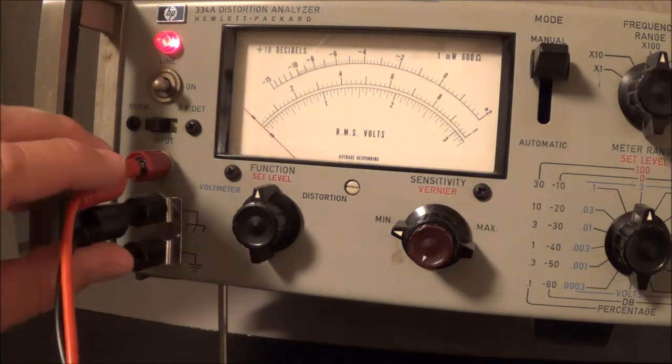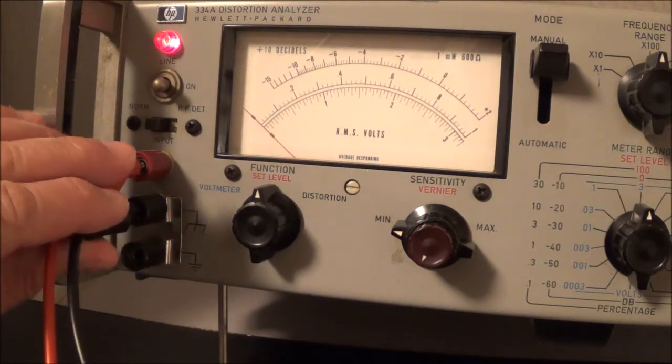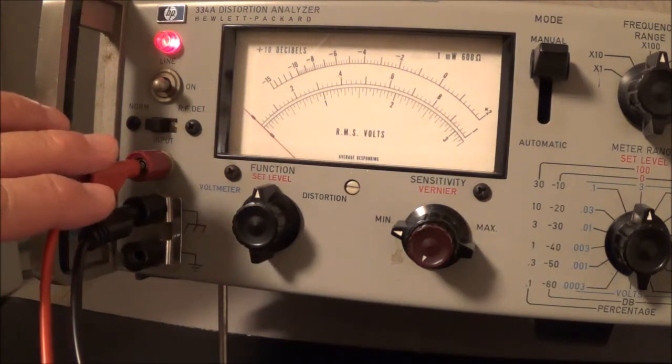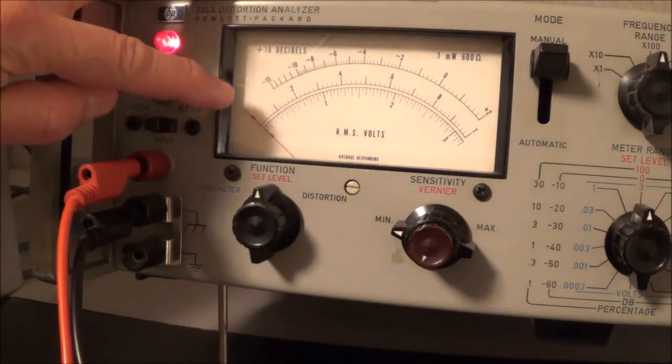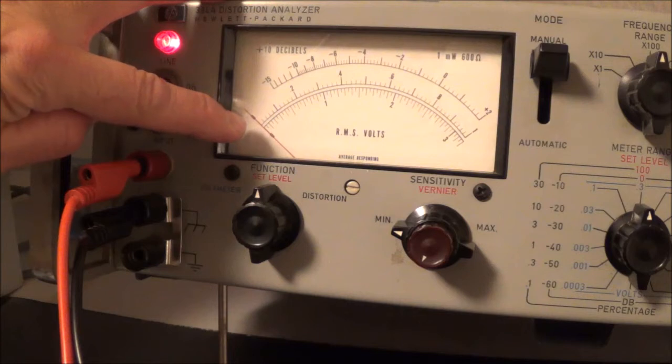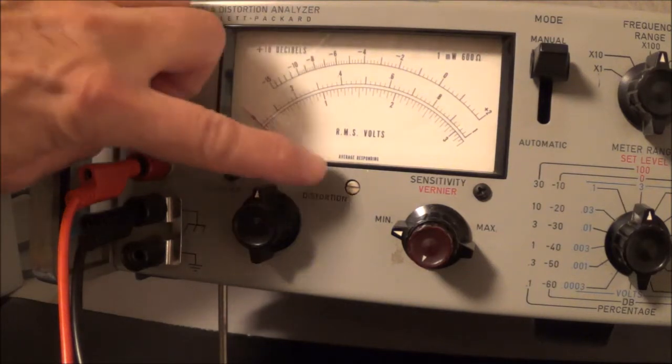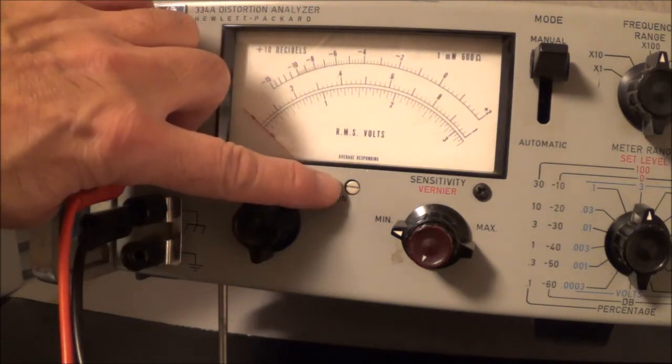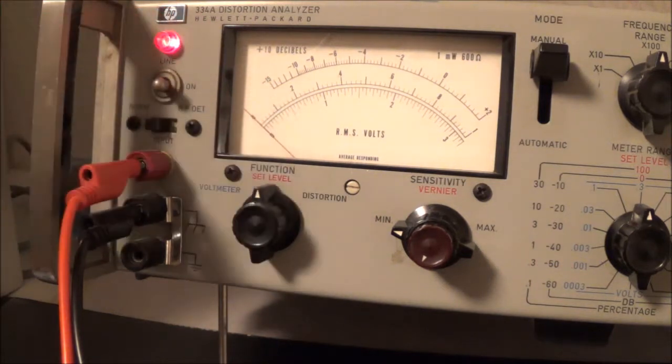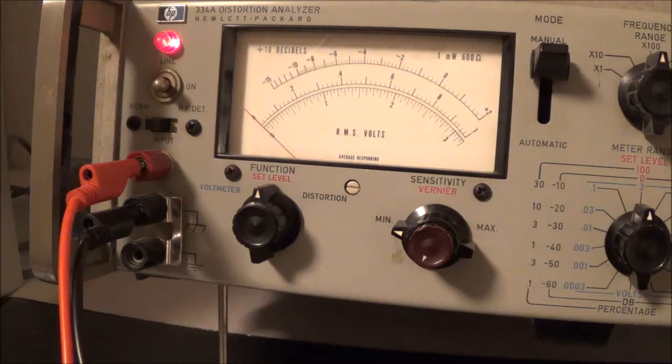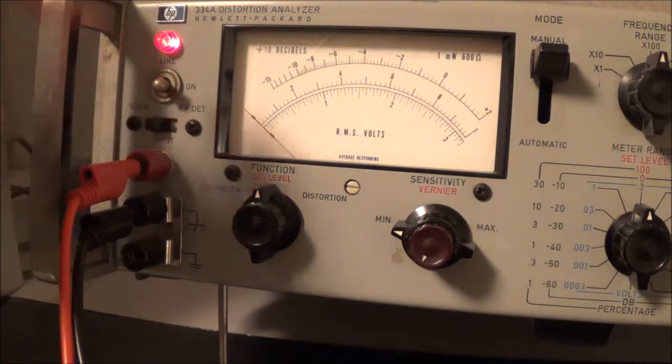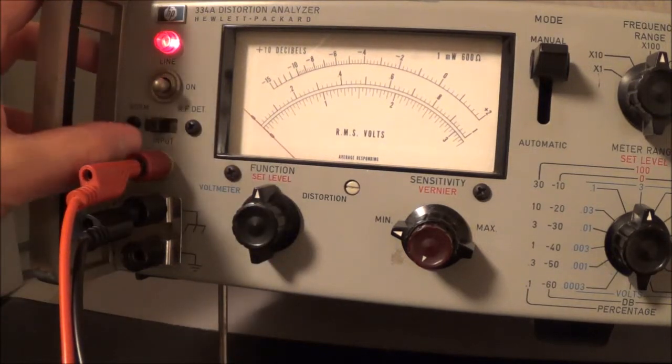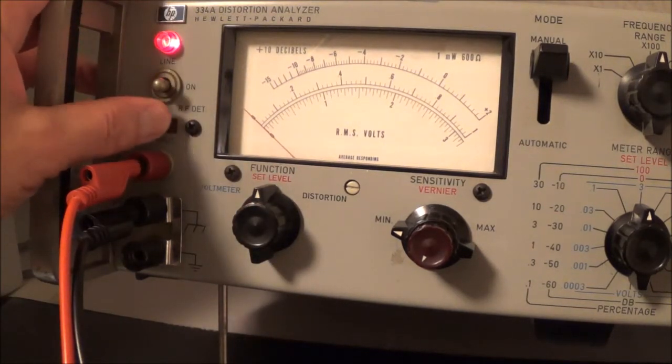And here you can see I've got the banana plugs hooked up here as the input. And the first thing I have to do, according to the manual, is make sure that this meter here is mechanically zeroed. If not, I think this is here for making sure that basically zeroes out. And then we're supposed to set the switch here to normal RF detection. That's supposed to be to the normal side.